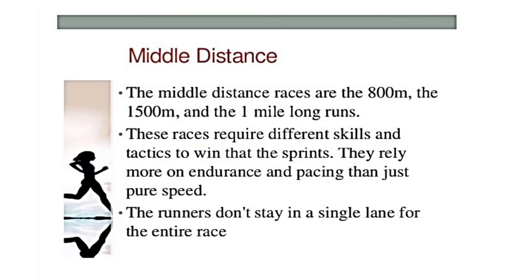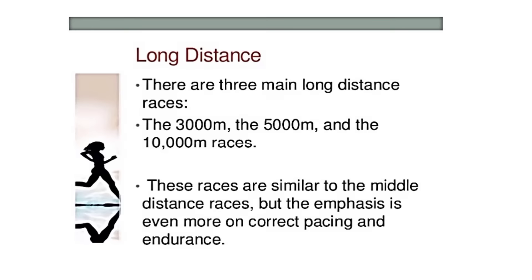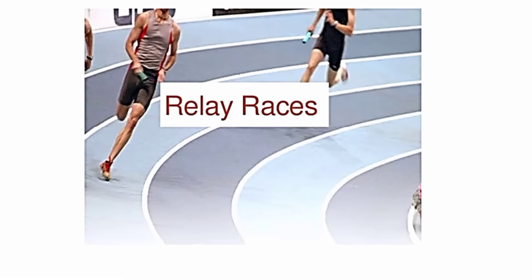The middle distance races are the 800 meters, the 1500 meters, and the one mile. These races require different skills and tactics compared to sprints — they rely more on endurance and pacing than pure speed, and runners don't stay in a single lane for the entire race. For long distance, the three main races are the 3000 meters, 5000 meters, and 10,000 meters. These are similar to middle distance races but with even greater emphasis on correct pacing and endurance.